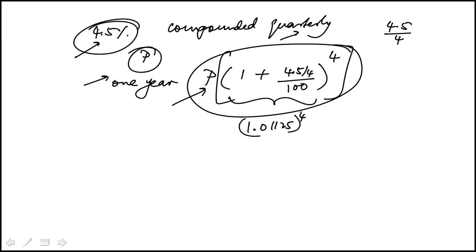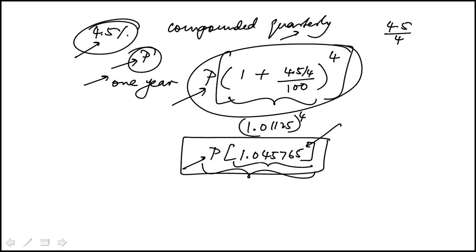So essentially what this means is that if you owed P, at the end of the year, you're going to owe this much, P times whatever the principal is, times that. And we can see what that percent increment is.